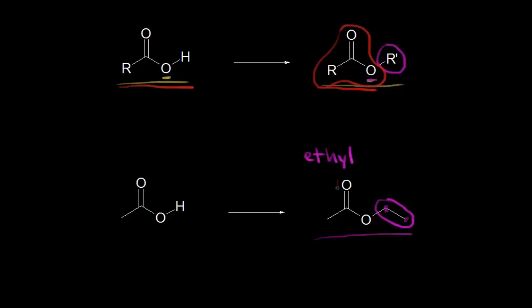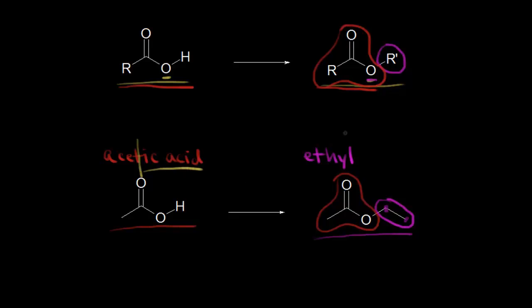Next we think about this portion of the ester. We can think about that as coming from this carboxylic acid, and we know this carboxylic acid is called acetic acid. To finish naming our ester, we're going to drop the IC part and the acid ending, then add -ate instead. So we drop the IC and the acid and add -ate.